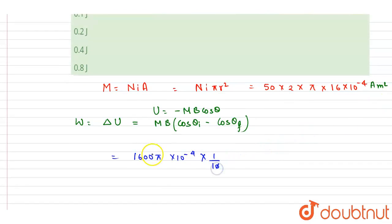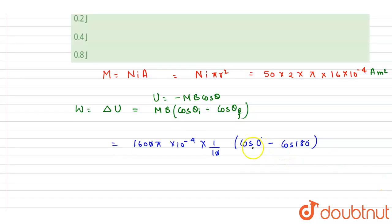I will write down cosine of initial angle was 0 and it is rotated by 180, so cos 180 is -1, so it will be 1 + 1, which equals 2.